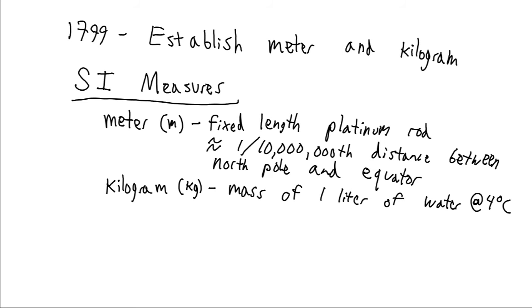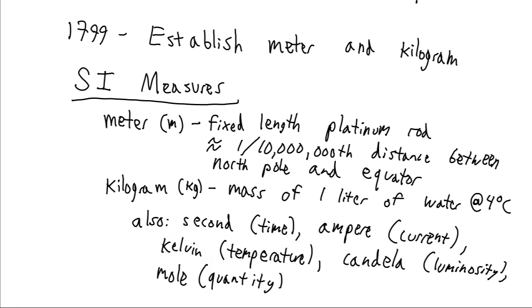Now later on, additional units are added to the SI system. There is second to measure time, there's the ampere to measure current, there's Kelvins to measure temperature, candela to measure luminosity, and moles to measure quantity. These provide the seven fundamental units of the SI system. All other units are based off of these seven units.